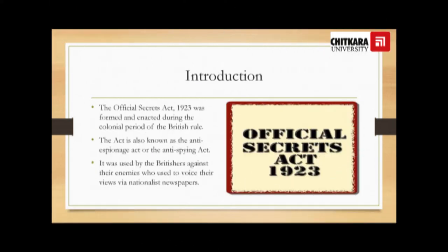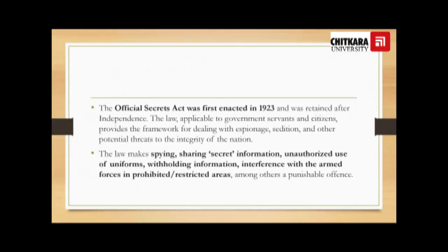The Official Secrets Act 1923 was formed and enacted during the colonial period of British rule. The Act is also known as the Anti-Espionage Act or the Anti-Spying Act. It was used by the British against their enemies who used to voice their views via nationalist newspapers. The Act was retained after independence and provides the framework for dealing with espionage, sedition and other potential threats to the integrity of the nation.